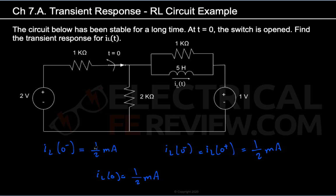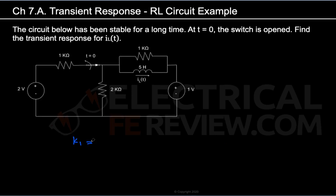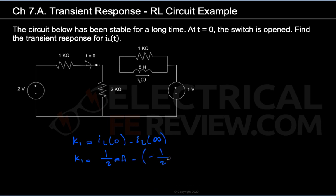Now let's find K1, the constant for the transient response. K1 is found using the formula: K1 equals IL at 0 minus IL at infinity. Note that for an RC circuit, you would use VC, the voltage across the capacitor, instead of IL. We found IL at 0 to be 0.5 mA and IL at infinity to be negative 0.5 mA. Doing this math, K1 equals 1 mA.